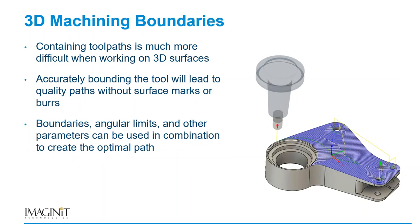That's a summary of 2D boundaries and chaining — chain, pocket, and silhouette are the most commonly used. When it comes to 3D, you have to spend more time thinking about how to contain your tool. By default, Fusion 360 will try to machine any surface it can see. You have to decide how to bound the tool and how it interacts with the edges of your boundary. There are several options: boundaries, angular limits, and surface or sketch boundary limits to use if the default methods don't work.